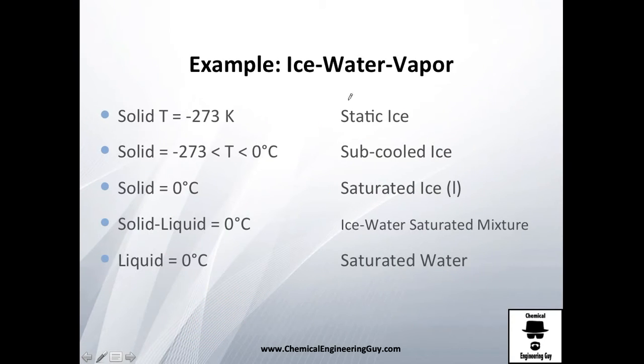Let me give you the first example of ice, water, and vapor. We start from the static ice, which in theory does not exist because you may not achieve this temperature, but let's suppose you start from here. Then you start heating, and you know you could have water from minus 273 Celsius to zero Celsius at one atmosphere. You got your subcooled ice. Then we get to zero Celsius. You can have ice at zero Celsius. We call this saturated ice.